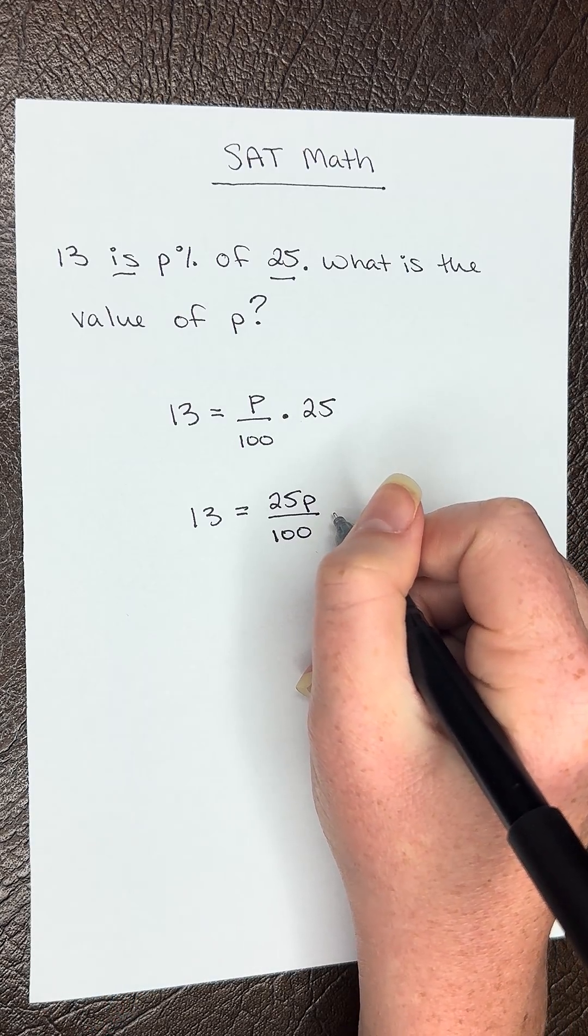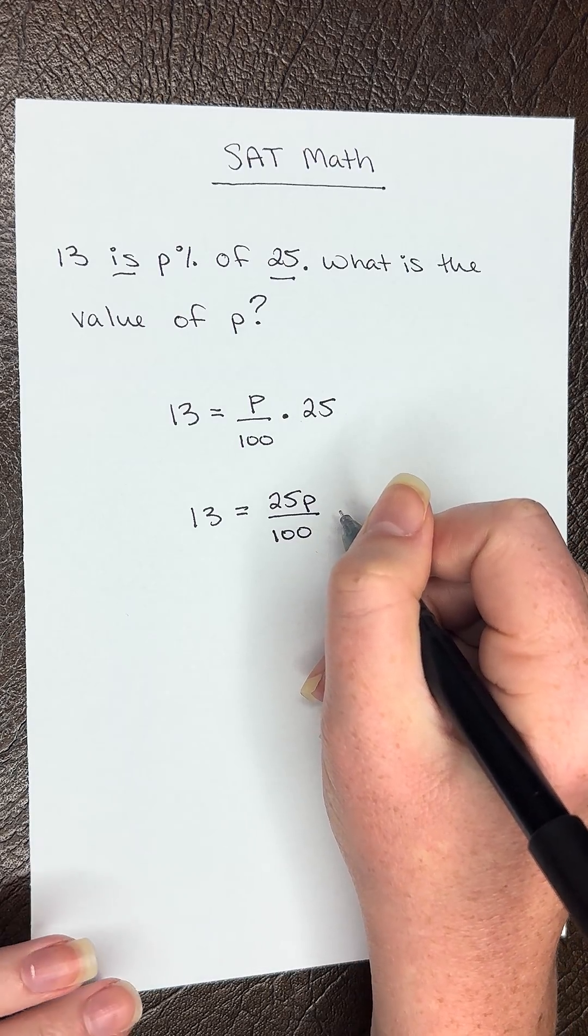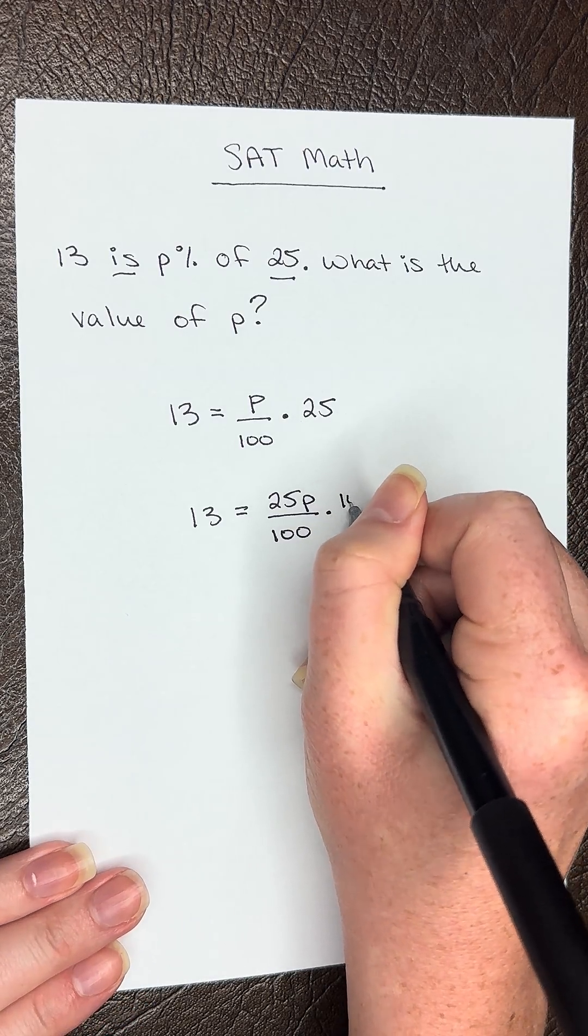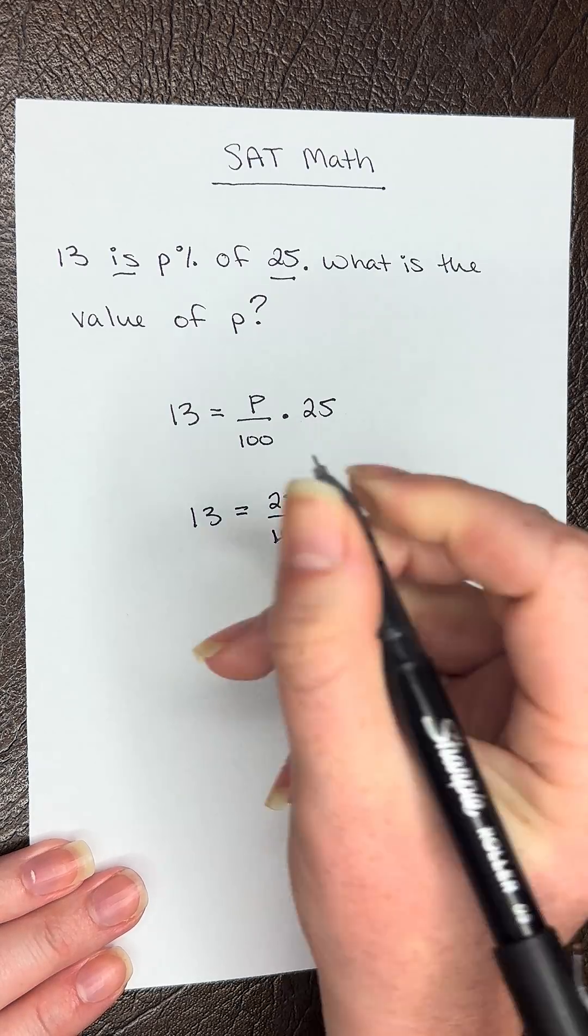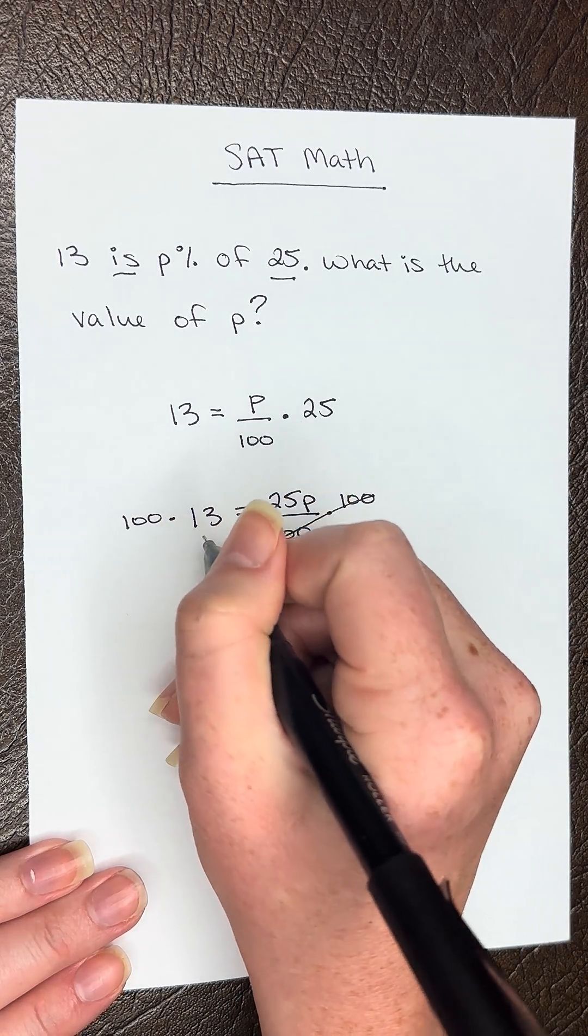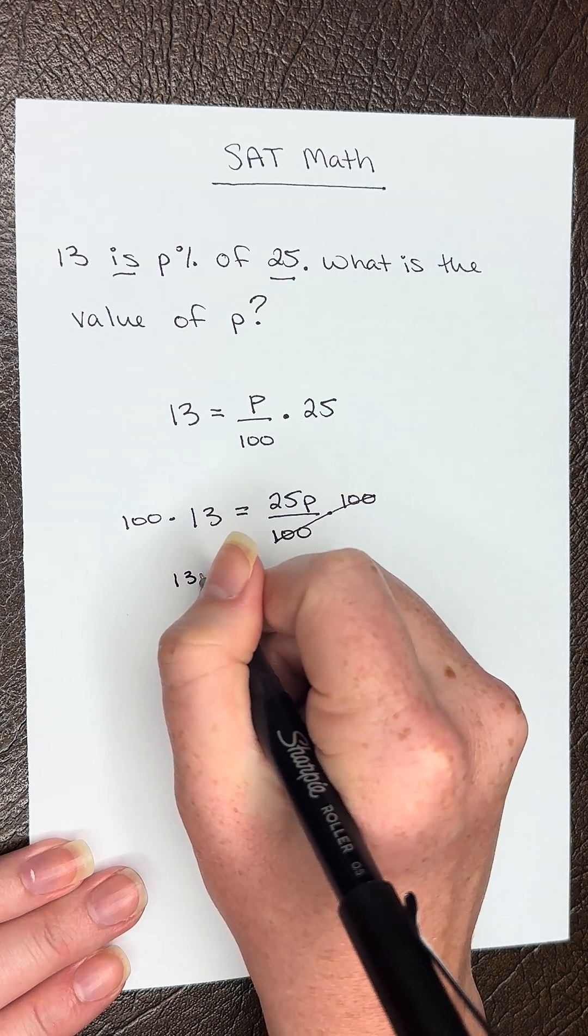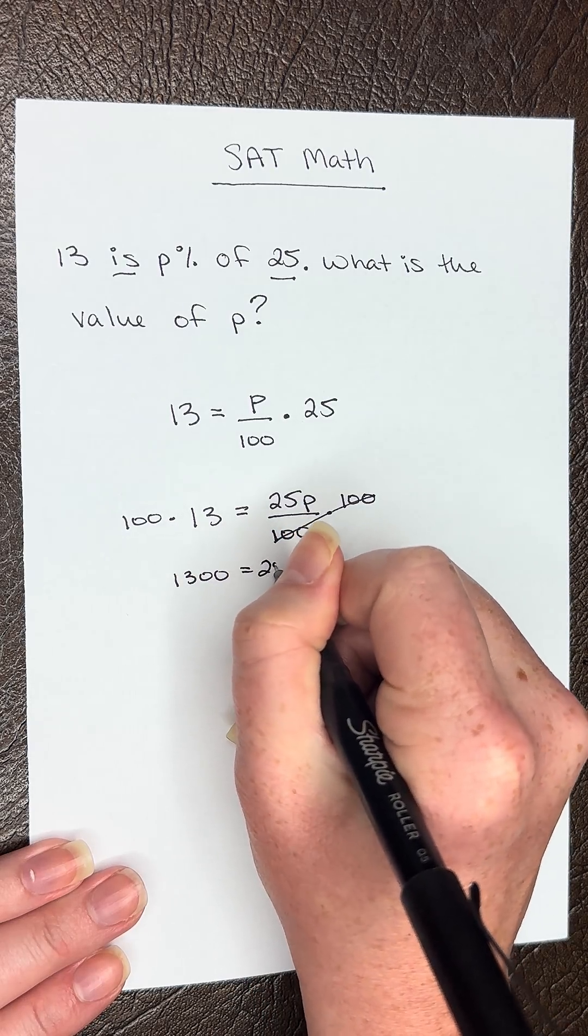Now we need to multiply by 100 on both sides. Times 100, times 100. 100 times 13 is going to give us 1300 equals 25P.